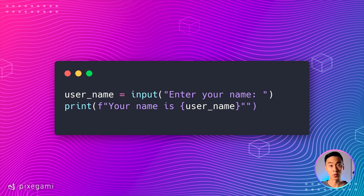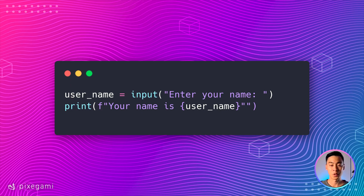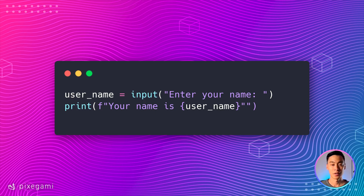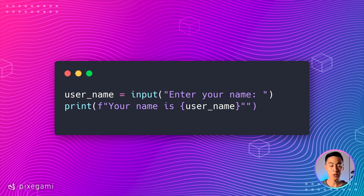To store the value that the user types in, we can use the assignment operator to set that value into a variable. So if we use the input function, we can assign whatever that resolves to into a variable called user_name. And now we can use user_name like any other string variable. That's because this input statement is a built-in Python function, and whenever the user types in something and presses enter, that value they typed in will be returned as a string.